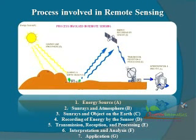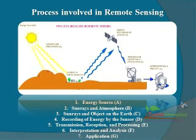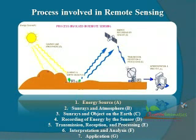The process involved in remote sensing: 1. Energy source, 2. Sun rays and atmosphere, 3. Sun rays and object on the Earth, 4. Recording of energy by the sensor, 5. Transmission, reception, and processing, 6. Interpretation and analysis, 7. Application.